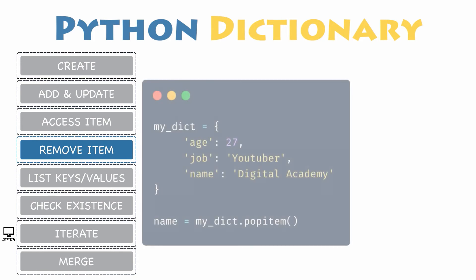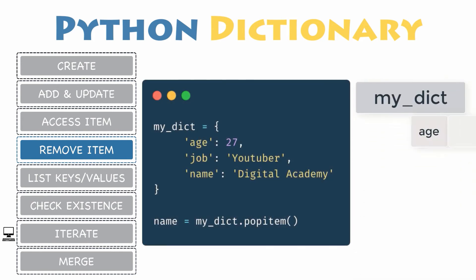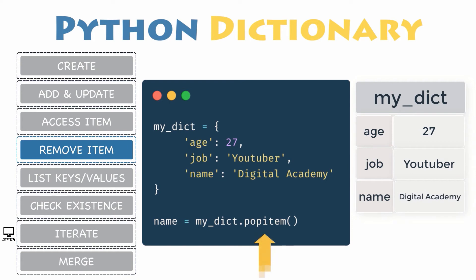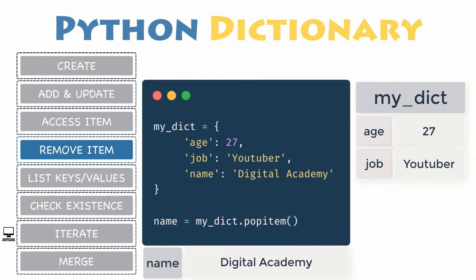Sometimes you need to iterate through a dictionary in Python and delete its items sequentially. To accomplish this task, you can use the function POPitem, which will remove and return the last inserted item from the dictionary. Please note that in Python versions before 3.7, the POPitem method removes a random item, not necessarily the last inserted.